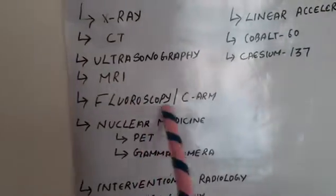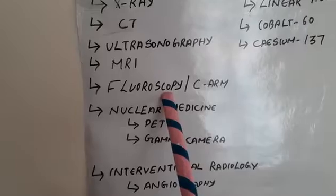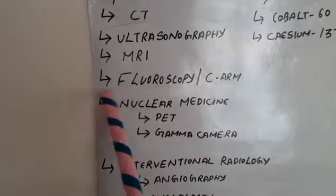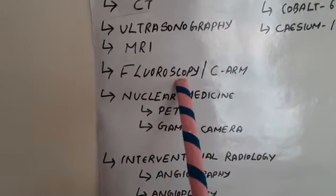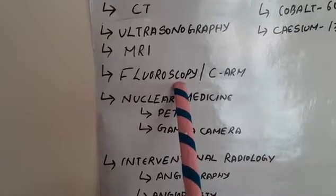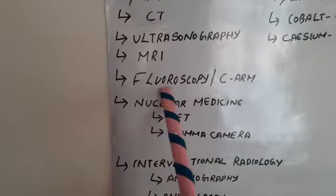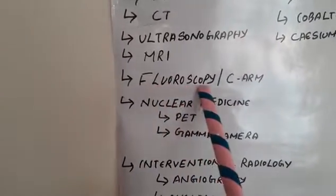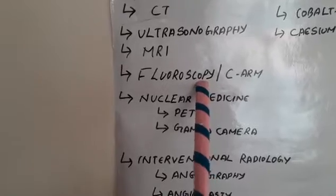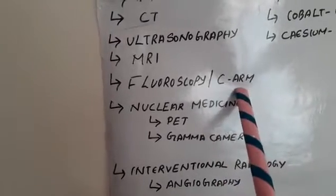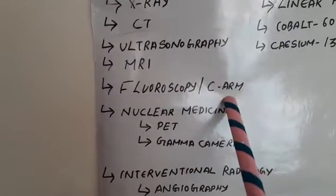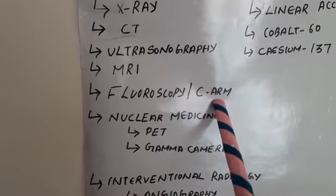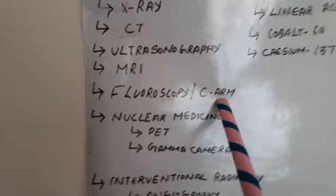Fluoroscopy is associated with the use of X-rays to produce real-time moving images. It is used for special radiographic procedures like barium meal, barium enema, enteroclysis, and HSG. C-arm is an advanced version of fluoroscopy, used in orthopedic surgeries, cath labs, and interventional procedures, also providing real-time moving images.